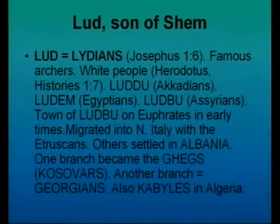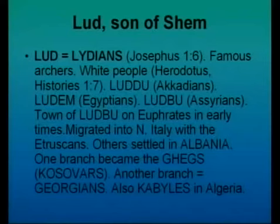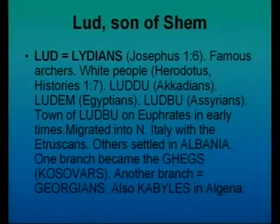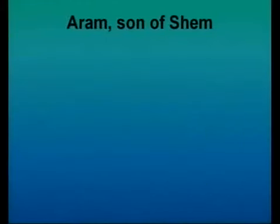Lud, the son of Shem, was the father of the Lydians, as Josephus tells us. They were famous as archers in battle and particularly described by Herodotus in the 5th century BC as quite white-skinned people. They were known as the Ludu by the Acadians, or Ludem by the Egyptians, Ludbu by the Assyrians, and there was actually a town called Ludbu on the Euphrates in early times. They migrated into north Italy with the Etruscans — who were famous because the Tarquins came out of them, essentially founding the Roman Empire. Others settled in Albania — one branch became the Gegs, the Kosovars as we know them today; another branch settled as the Georgians; and others as the Kabyles in Algeria in North Africa.